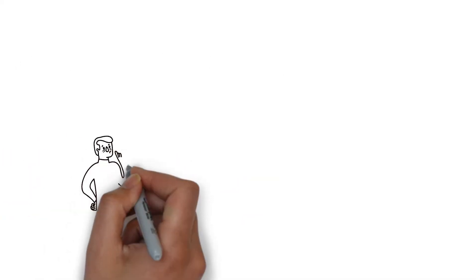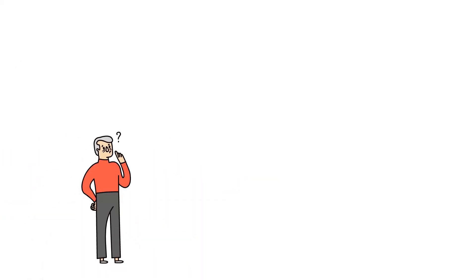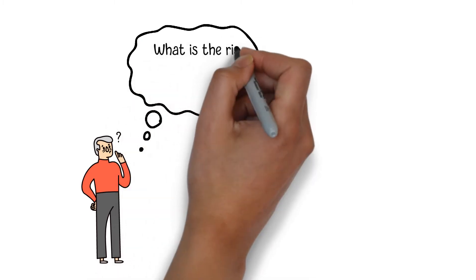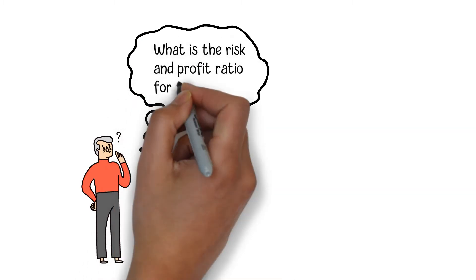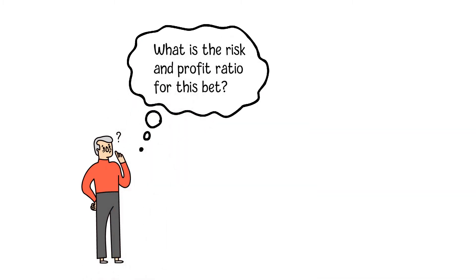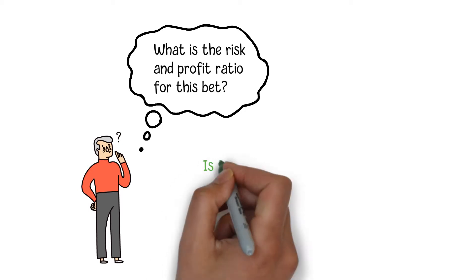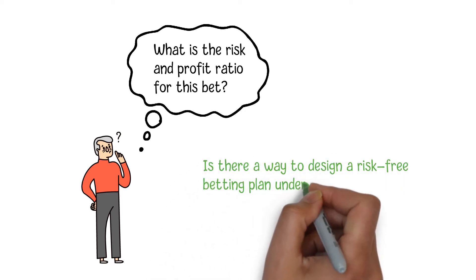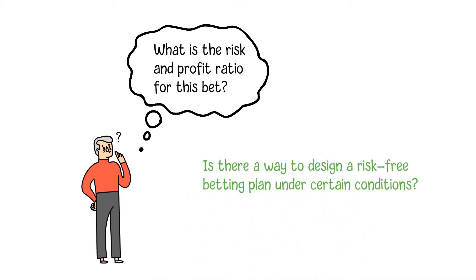Before we make a bet, the risk and profit ratio is normally an important factor we need to think about for our plan. This means we usually need to accept some risks of loss for a bet in which the winning probability is not 100%. Is there a way to design a risk-free betting plan under certain conditions?